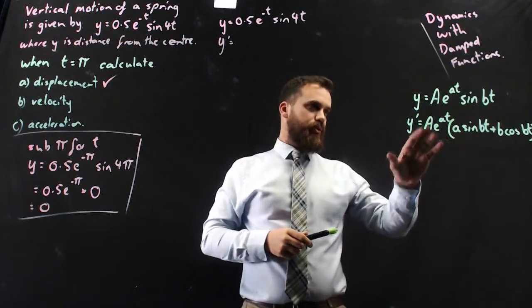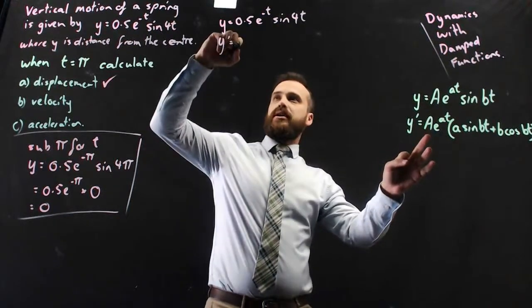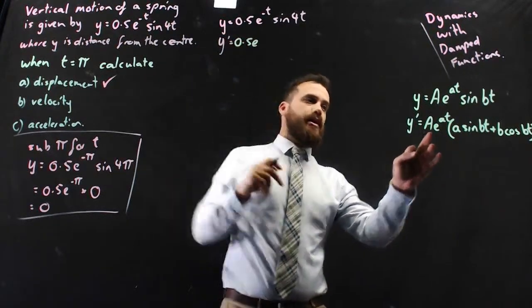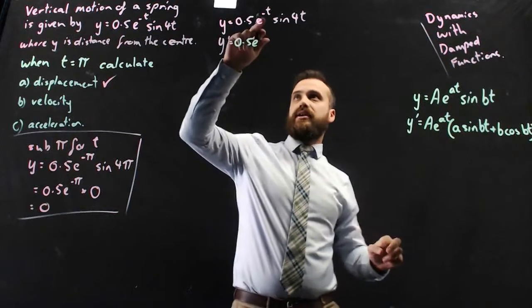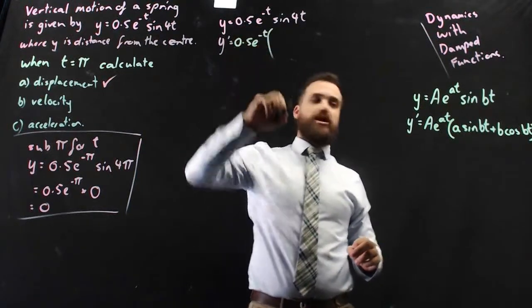So simply put, we can go through this and we can say that y dash is equal to 0.5e to the little at, now that's just negative 1 there, so negative t. So that doesn't change at all.